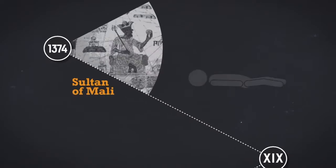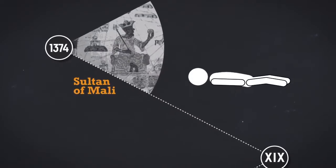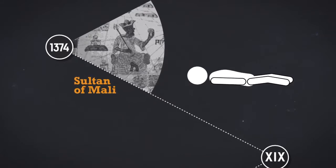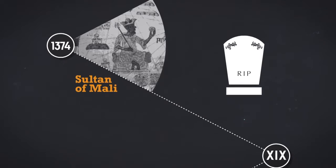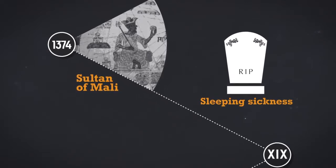In 1374, the gravely ill Sultan of Mali fell into a torpor from which he would never recover. His death was the first to be attributed to what would become known as sleeping sickness.